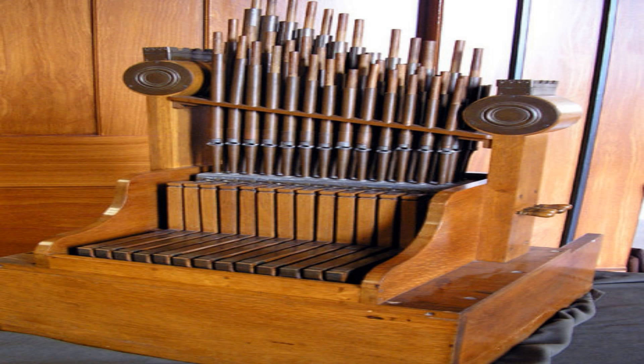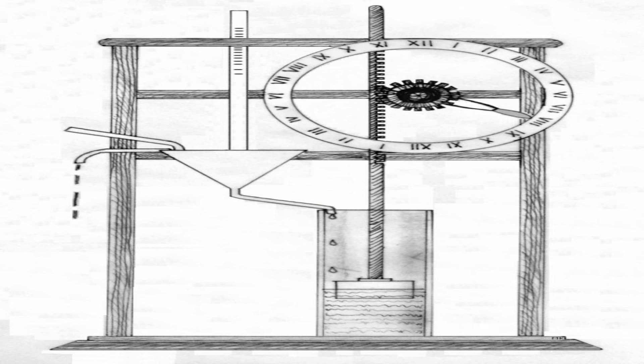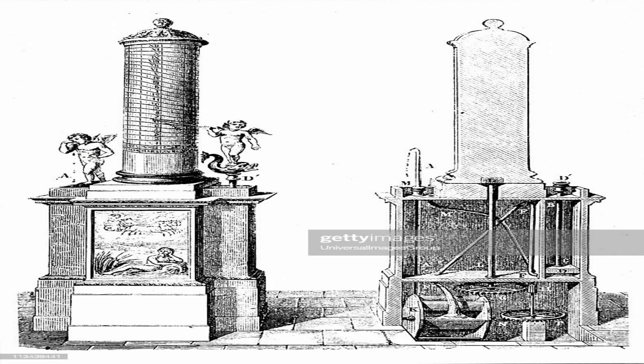The genius of Ctesibius' invention was that he used air pressure to balance the water pressure in the second tier. He connected a tube from the top of the second tier to an air chamber above the reservoir. As water flowed out of the second tier, air flowed in through the tube to fill up the space left by the water. This created an equal pressure on both sides of the hole at the bottom of the second tier, ensuring a constant flow of water.